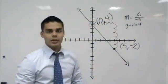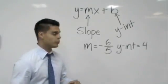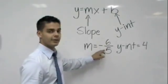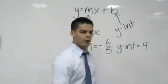Let's learn a little bit more about what the y-intercept really is. So back to our example, we have figured out that the slope was negative six over five, and our y-intercept was four.